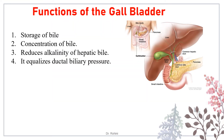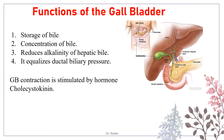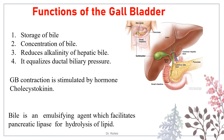Functions of the gallbladder: it stores and concentrates bile 10 times more than liver bile, reduces the alkalinity of hepatic bile, and equalizes ductal biliary pressure. When a meal — predominantly a fatty meal — appears in the duodenum, the gallbladder contracts. This contraction is stimulated by the hormone cholecystokinin, secreted by the duodenal mucosa, which acts on the gallbladder causing contraction. The sphincter of Oddi relaxes and bile flows into the small gut. Bile itself is an emulsifying agent that facilitates pancreatic lipase for hydrolysis of lipids.